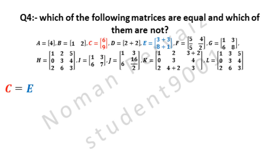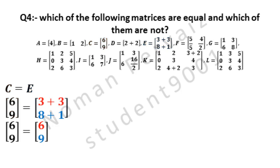Matrices C and E are equal. The value of matrix C is 6 and 9 as represented by red color. And the value of matrix E is 3 plus 3 and 8 plus 1 as represented by blue color. 3 plus 3 is 6 and 8 plus 1 is 9. Since the values and orders of both matrices are same, both are equal.